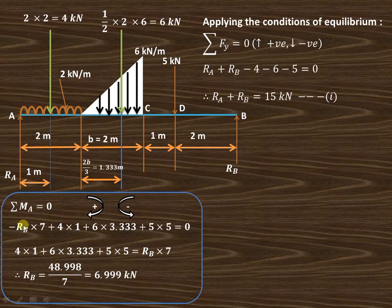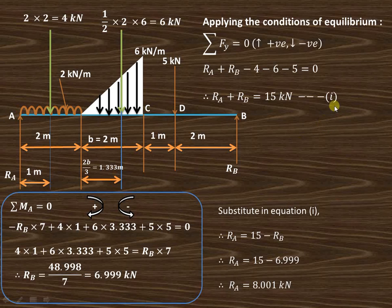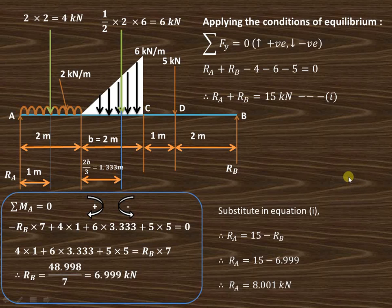Transferring the negative term to the other side, we can find the value of RB, which is nearly 7 kilo newton. Substituting this value into equation 1, RA equals 15 minus RB, which is nearly 8 kilo newton. In this way we can find out the beam reactions in case of a simply supported beam carrying uniformly distributed load as well as uniformly varying load.